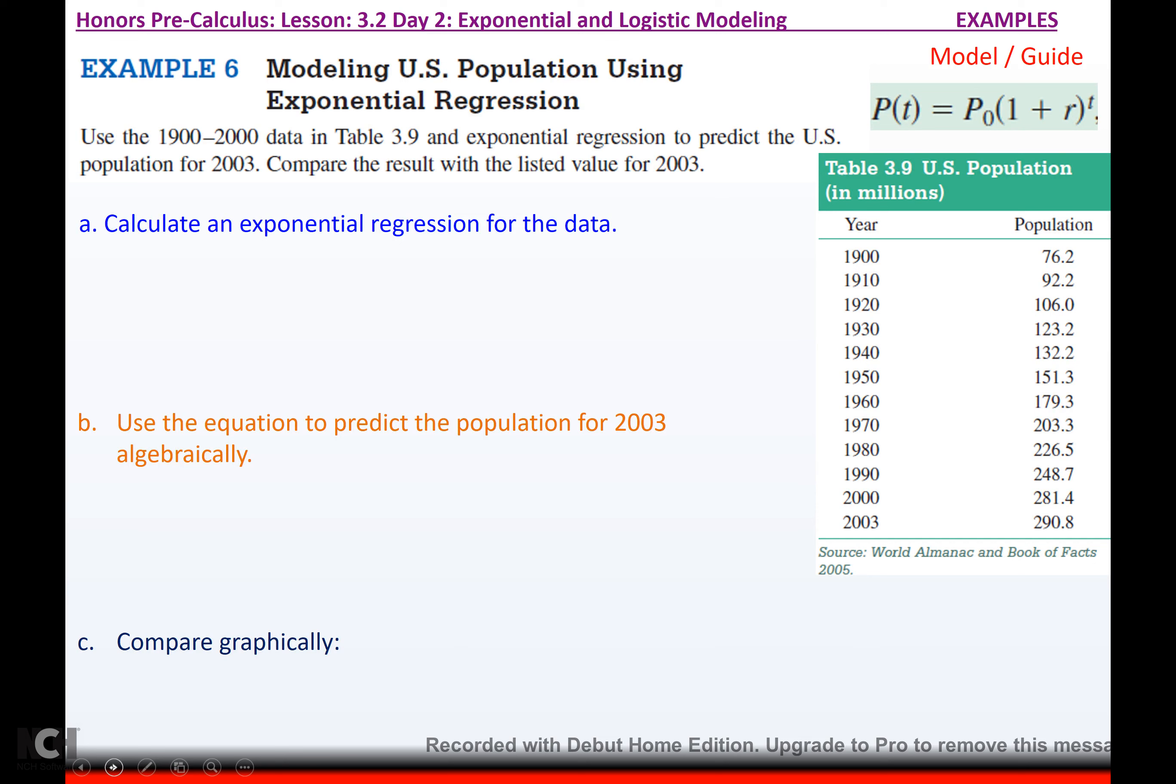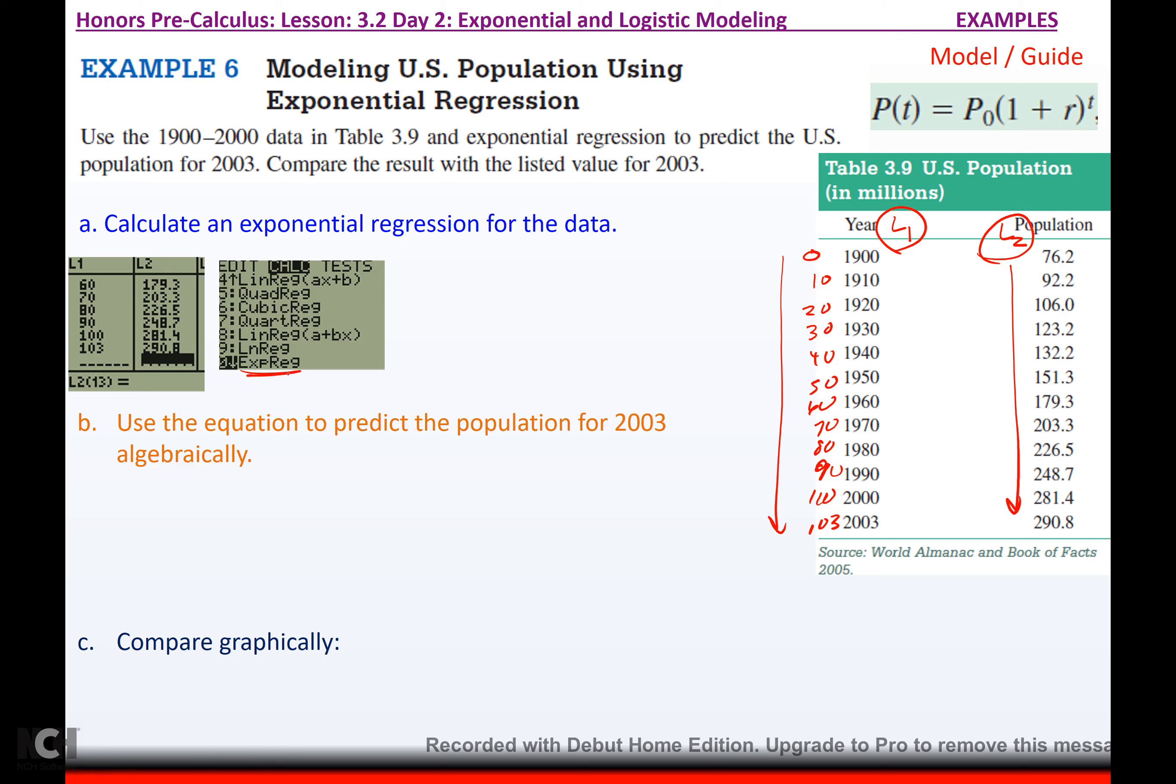It says, use the 1900 to 2000 data in table 3.9 and exponential regression to predict the U.S. population for 2003. Compare the results with the listed value for 2003. So, we have to calculate an exponential regression for the data, which means you're going to type in all of these under L1 and all of these under L2. However, you don't want to plug in 1900 for your year. Let's call this starting at 0. So, if that's 0, 1910 would be 10 years later, 1920 would be 20 years. So, we're counting by 10. So, 70, 80, 90, 100, and up until right here, then that's only 3 years difference. So, these are the X values you're going to type in for L1. These are the Y values you're going to type in for L2. And then you're going to calculate an exponential regression.